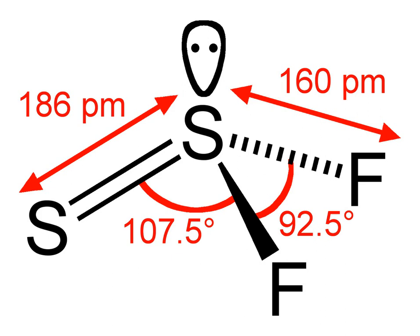A thiosulfoxide is a chemical compound containing a sulfur-to-sulfur double bond of the type RR'S=S, with R and R' both being alkyl or aryl residues. The thiosulfoxide has a molecular shape known as trigonal pyramidal, and its coordination is also trigonal pyramidal. The point group of the thiosulfoxide is Cs.